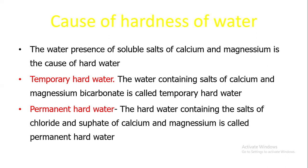In the permanent hard water, the water containing salts of sulphate and chloride of calcium and magnesium is called permanent hard water.